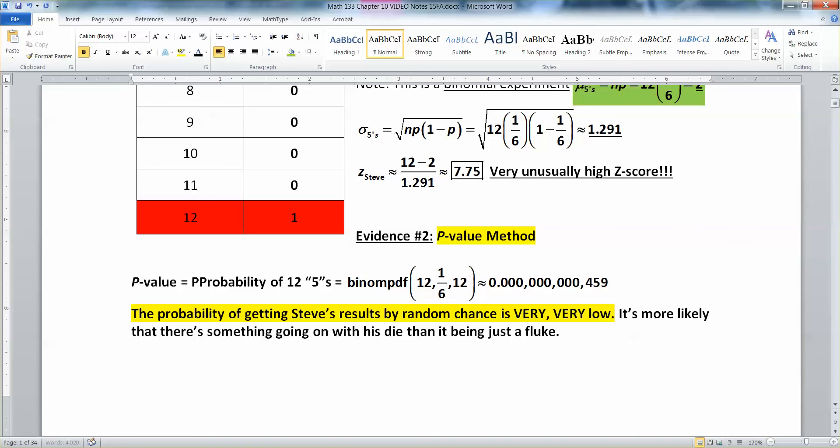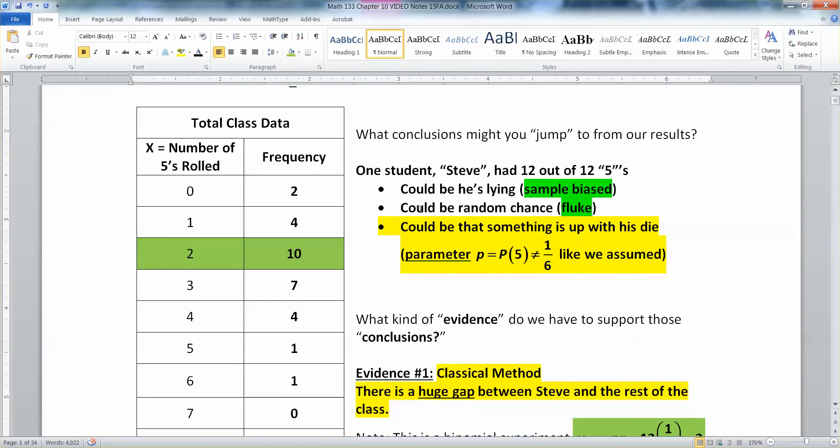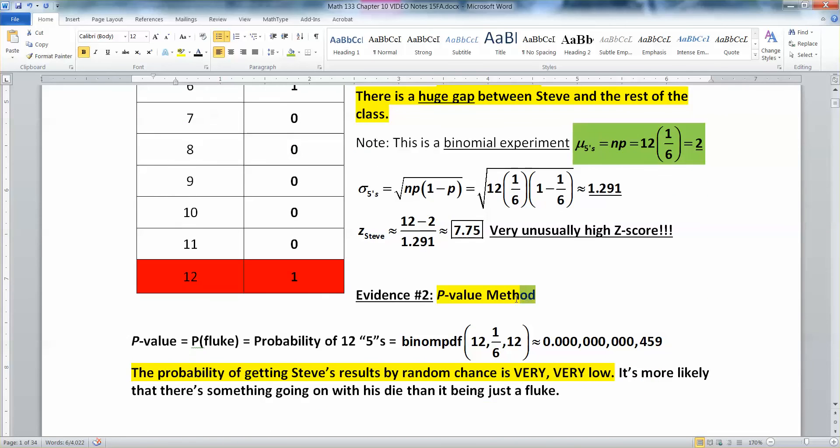And then the other method is finding the chances of it being a random fluke. That's what this is. This is the probability of fluke. The probability of getting what he got just by random chance. And if it's really, really, really, really low, you're going to say, no, I don't think that's going on either. Now, notice which one we don't talk about. We don't actually ever really deal with the lying sample bias thing. And that's because you can't. I mean, there's nothing you can do with something that's not random and unbiased.